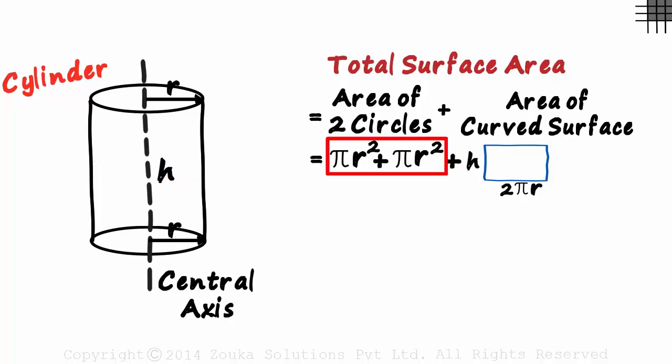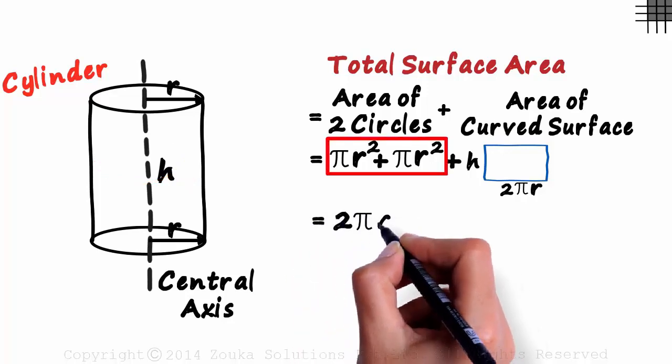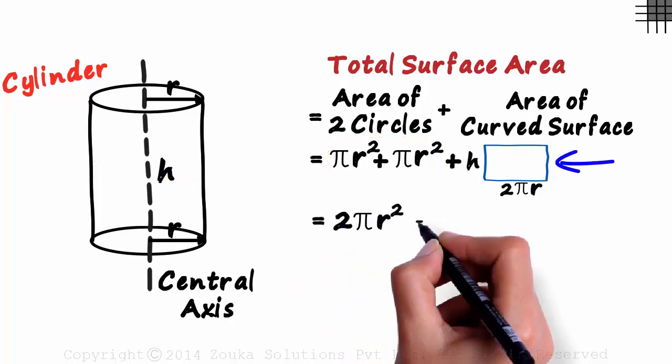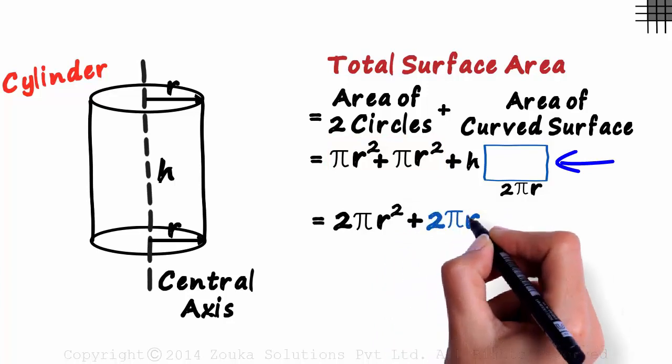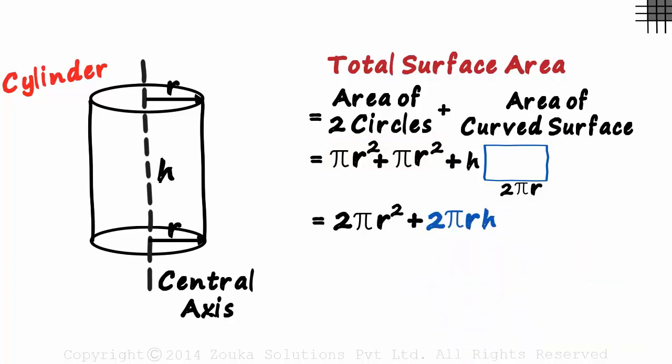Anyway, these two together add up to 2πr². And the area of this rectangle will be 2πrh. That's it. This is the total surface area of a cylinder with radius of the base r and height h.